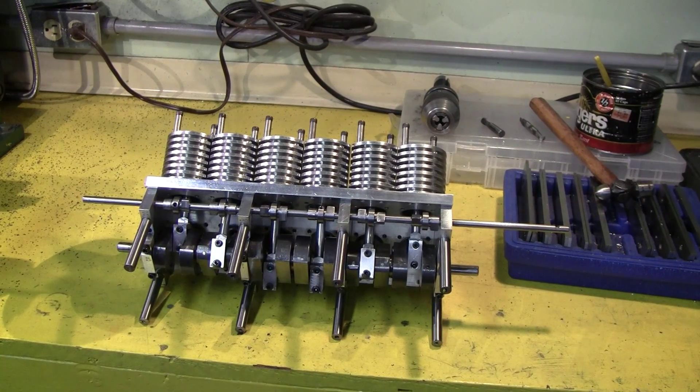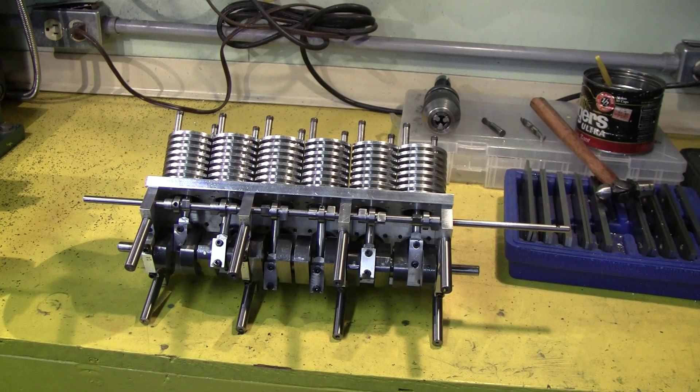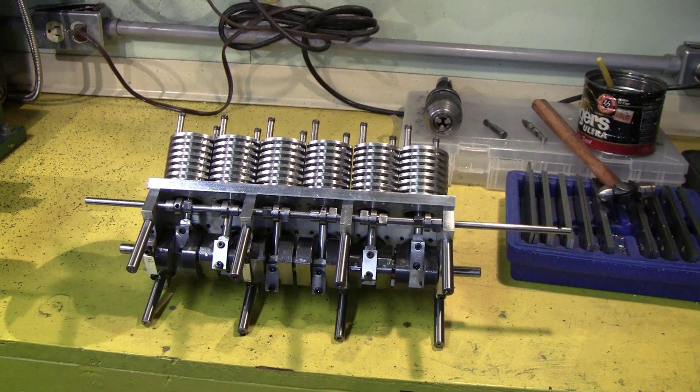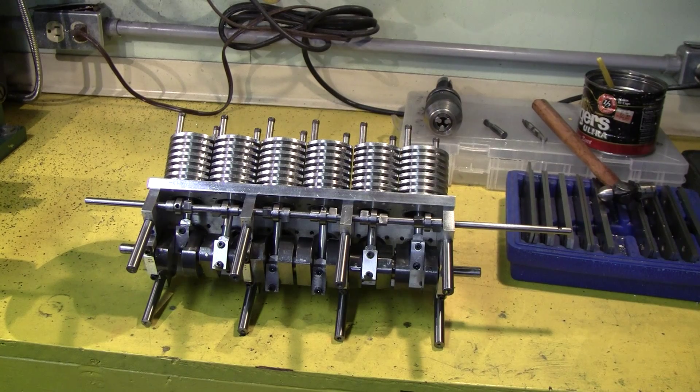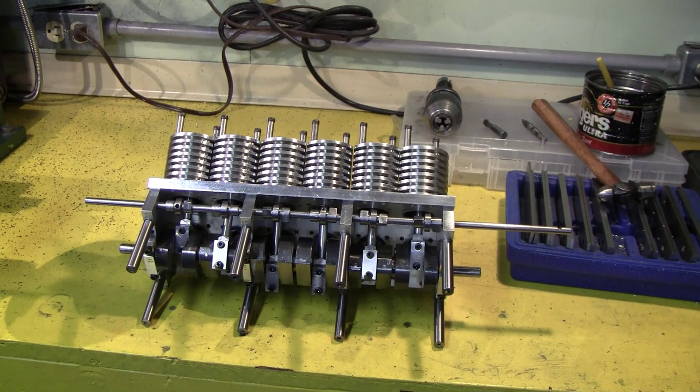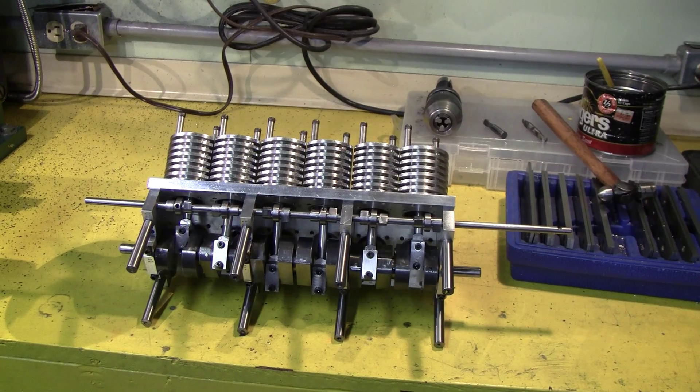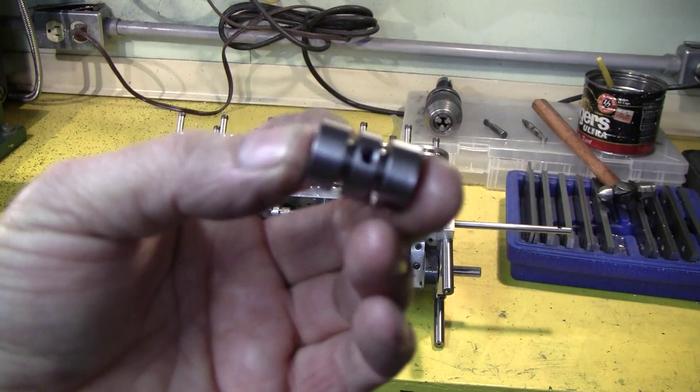Okay, in the last video I showed you how to mill the flats on the camshaft to accept the cams. This week I'm going to show you how we make the cams. Start out with a blank that's turned out on the lathe.